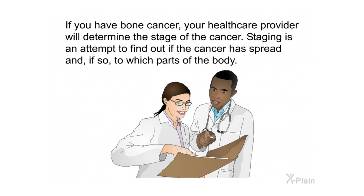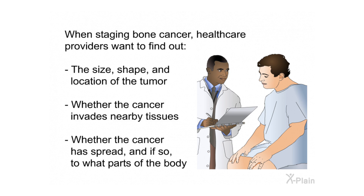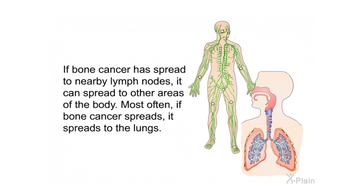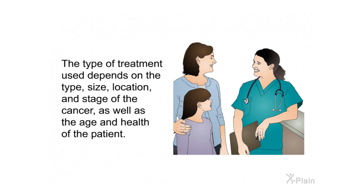If you have bone cancer, your health care provider will determine the stage of the cancer. Staging is an attempt to find out if the cancer has spread and, if so, to which parts of the body. Stages are usually described using the numbers one through four — a lower number indicates an earlier stage. Health care providers want to find out the size, shape, and location of the tumor; whether the cancer invades nearby tissues; and whether it has spread. If bone cancer spreads to nearby lymph nodes, it can spread to other areas — most often, the lungs.